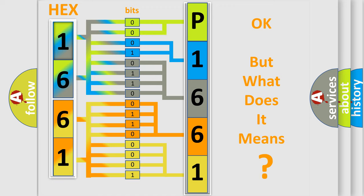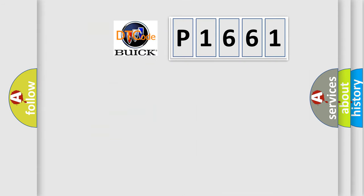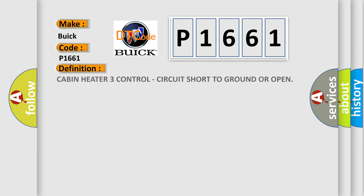We now know how the diagnostic tool translates received information into a more comprehensible format. The number itself does not make sense if we cannot assign information about what it actually expresses. So, what does the diagnostic trouble code P1661 interpret specifically for Buick car manufacturers? The basic definition is: Cabin Heater 3 Control Circuit Short to Ground OR Open.